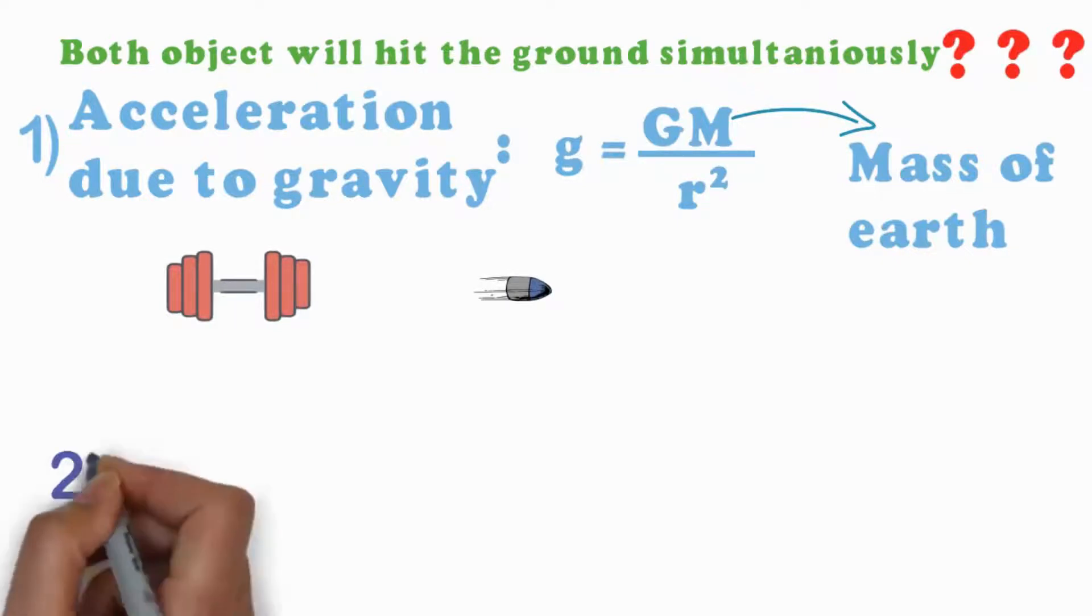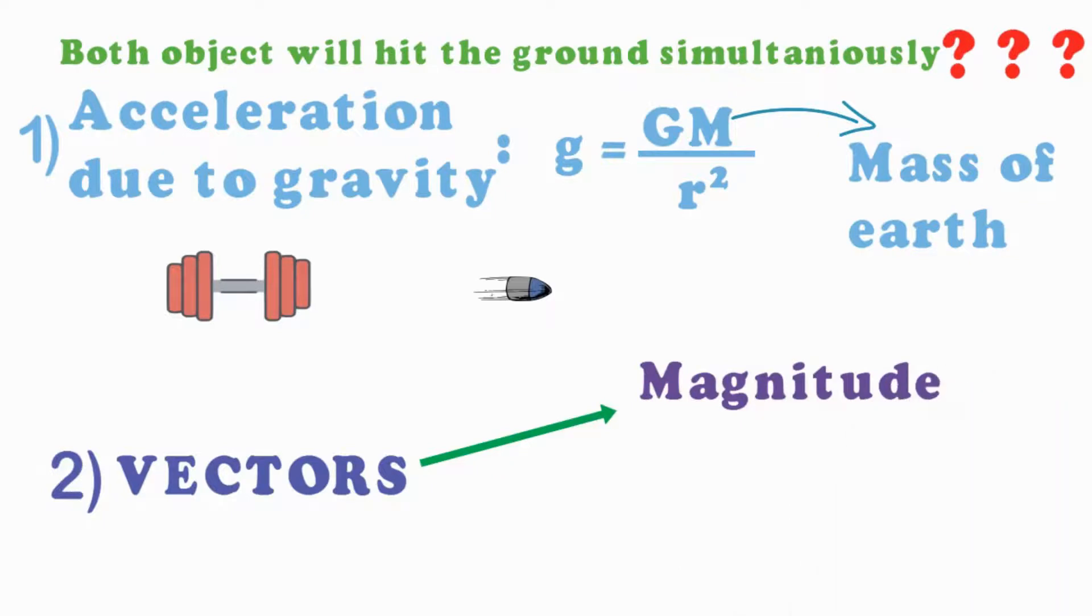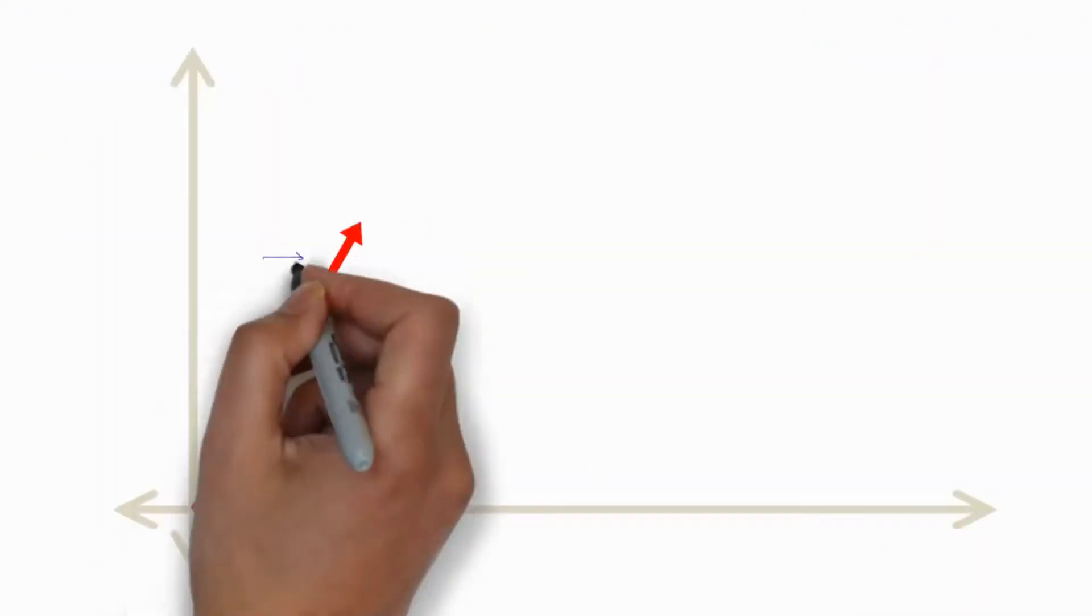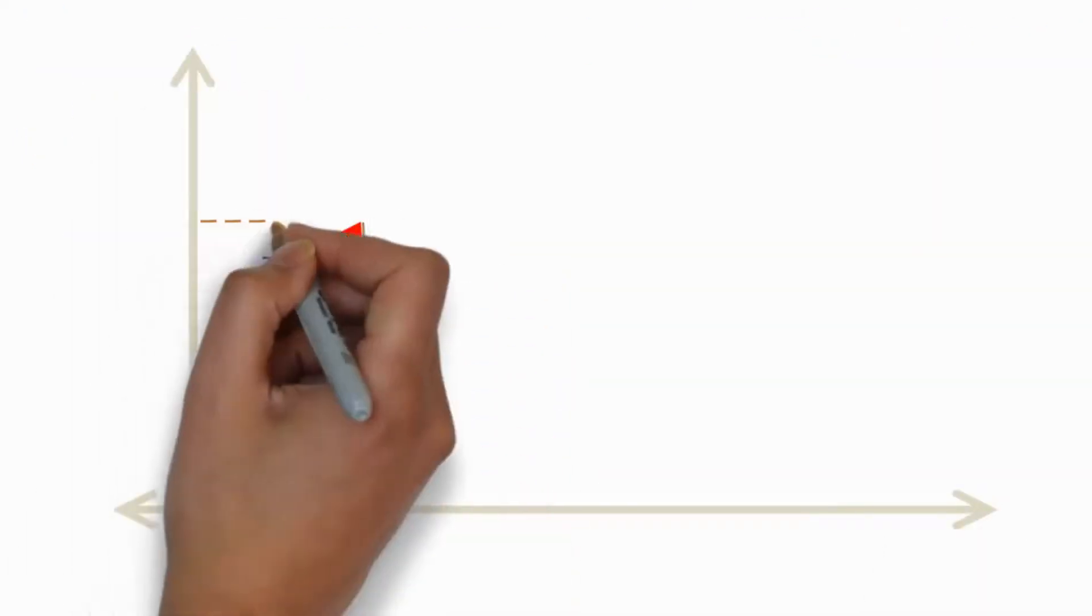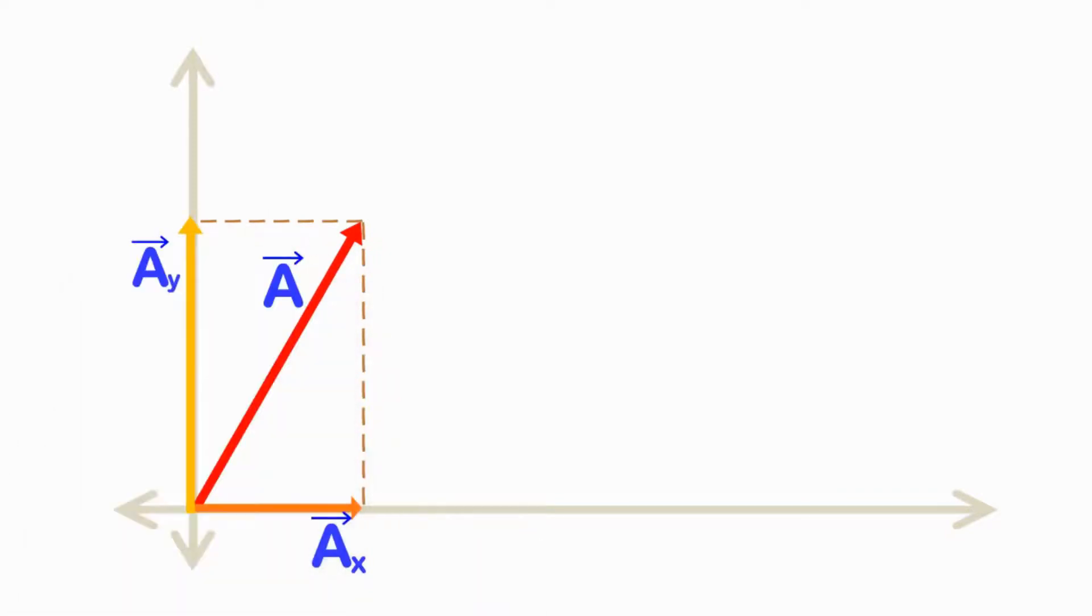Second, vectors—a quantity having magnitude as well as direction. Let us try to understand one of the most important properties of vectors in a coordinate system. Let a vector be any vector whose x-component is ax and y-component is ay. Now if I increase ax, that is the x-component of a vector,